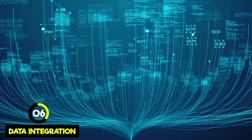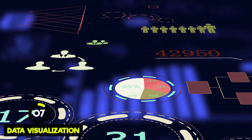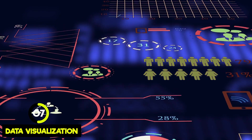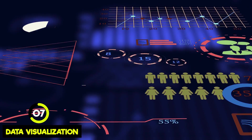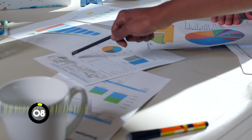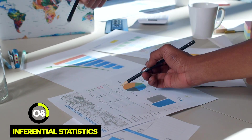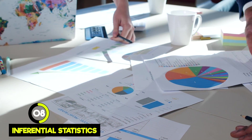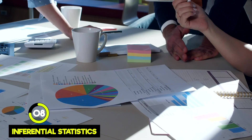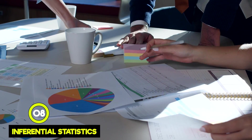Data integration means putting all of our data together in one place. Data visualization is all about showcasing data in a visual way to help people understand what's going on and to present our findings. Inferential statistics is a way of using a smaller sample to try to get an idea of the whole picture — like trying to understand a forest by just looking at a specific section of it. This is very useful because it's super hard to analyze a whole forest.